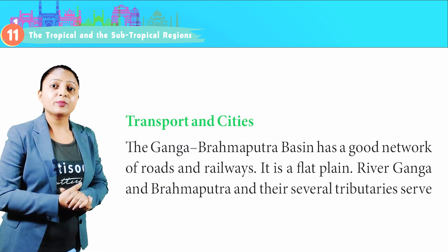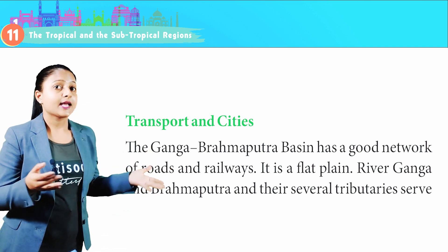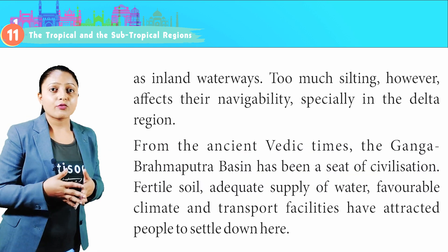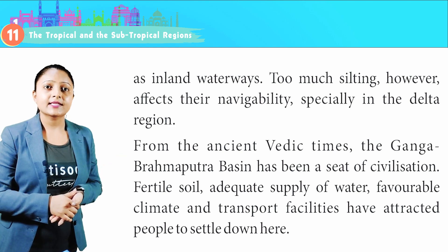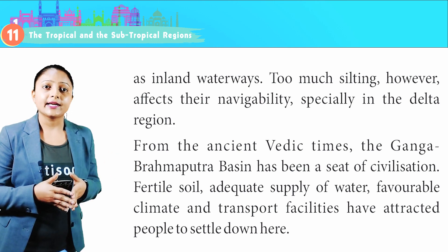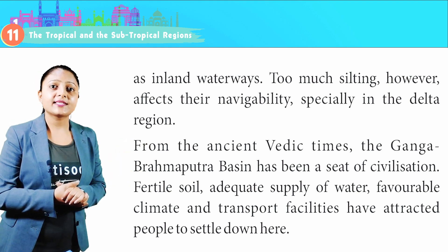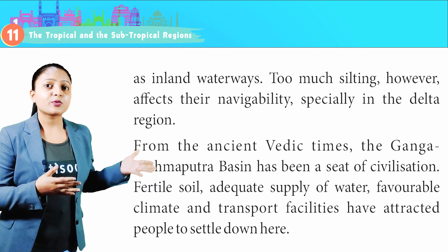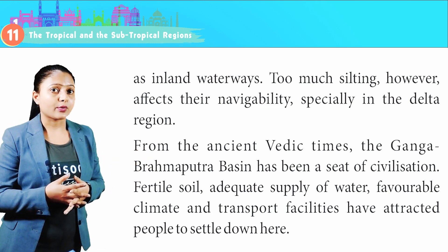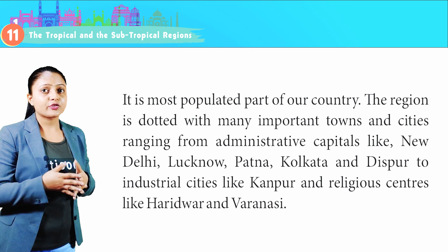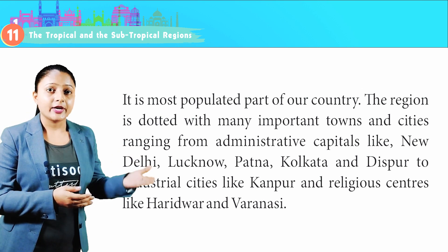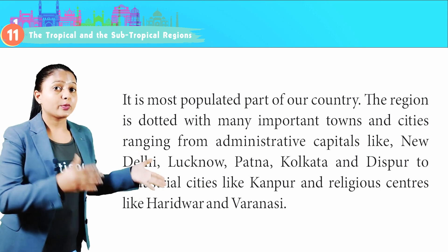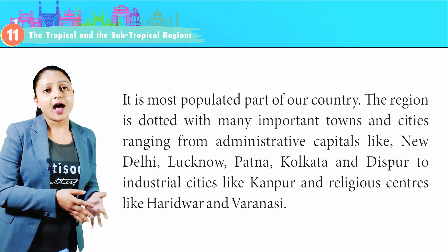Transport and Cities: The Ganga-Brahmaputra Basin has a good network of roads and railways across the flat plain. River Ganga, Brahmaputra and their several tributaries serve as inland waterways, though too much silting affects their navigability, especially in the delta region. From ancient Vedic times, the Ganga-Brahmaputra Basin has been a seat of civilization. Fertile soil, adequate water supply, favourable climate and transport facilities have attracted people to settle here, making it the most populated part of the country. The region is dotted with many important towns and cities, ranging from administrative capitals like New Delhi, Lucknow, Patna, Kolkata and Dispur, to industrial cities like Kanpur and religious centres like Haridwar and Varanasi.